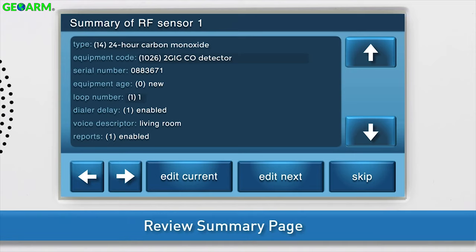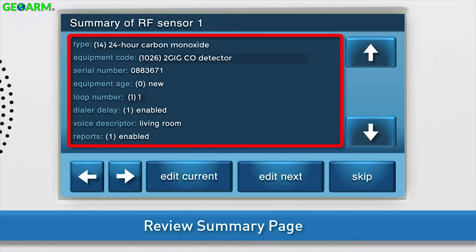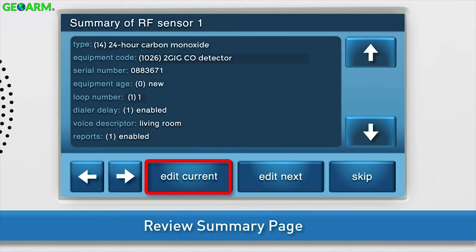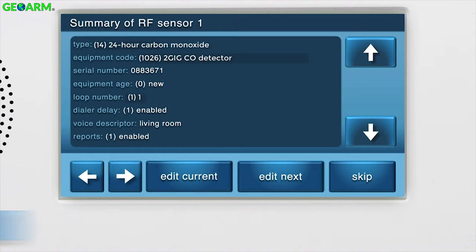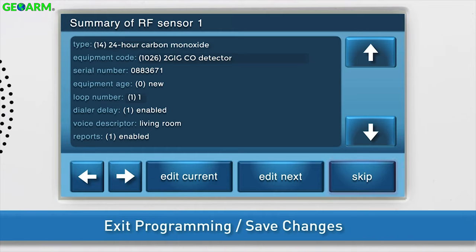Review the Summary page to ensure all information is correct. Review all answers. If you need to edit any of the information, press Edit Current. To exit programming mode and save your changes, press Skip.